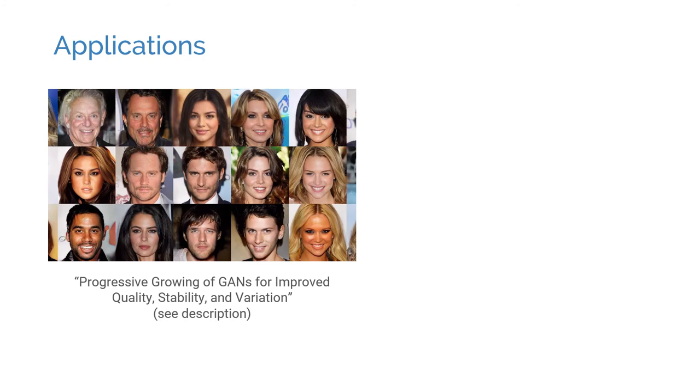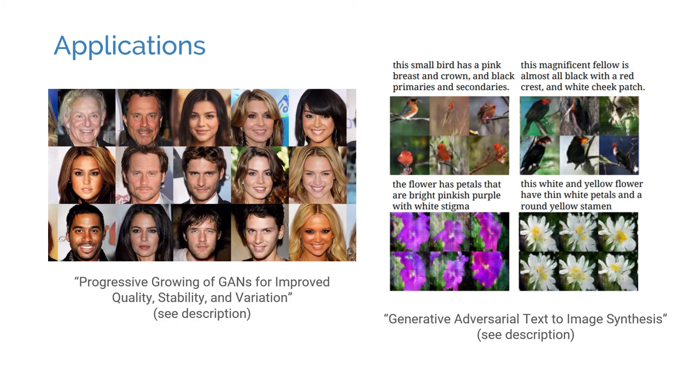GANs can be used anywhere we need to generate some data, particularly images and videos. They can generate photorealistic images that look like the ones from a training set, yet not identical to any of them, such as creating photos of celebrities that don't exist. They can learn to transform data, such as converting text into pictures, or converting pictures to other types of pictures. You can find more information about these applications in the description below.